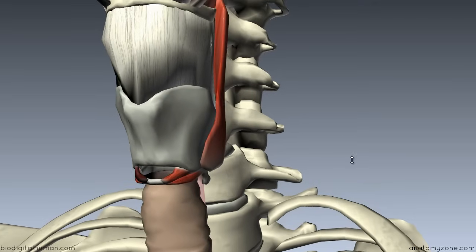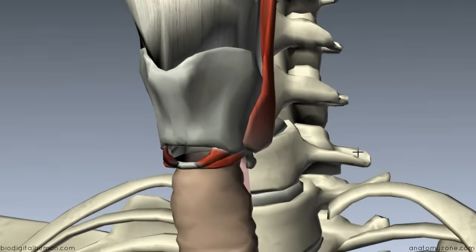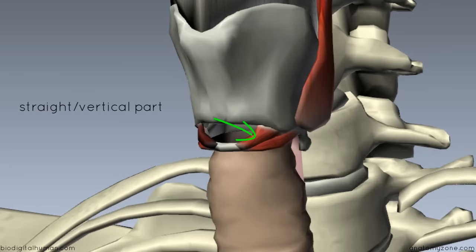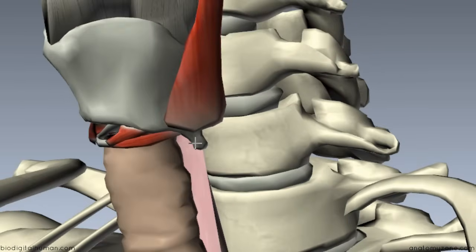You can see that this muscle has two distinct parts: a straight part and an oblique part. The straight or vertical part is attached to the inferior margin of the thyroid cartilage, and the oblique part is attached, as you can see here, to the inferior horn of the thyroid cartilage.